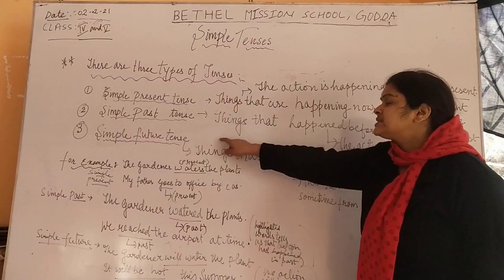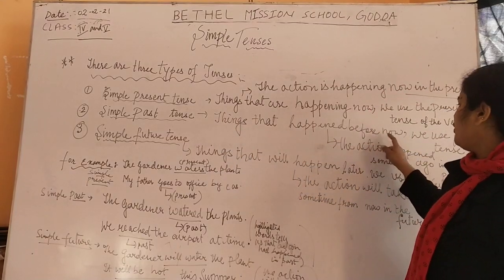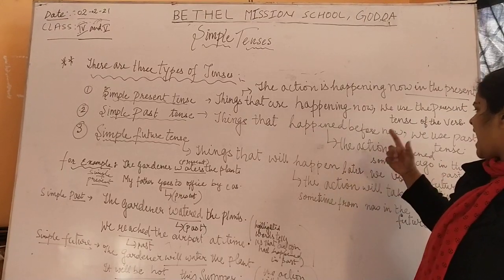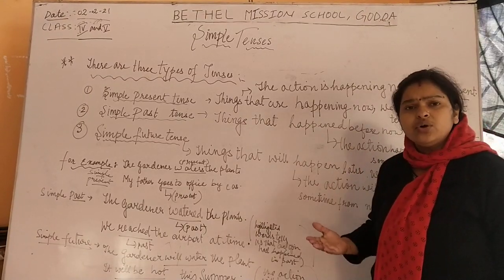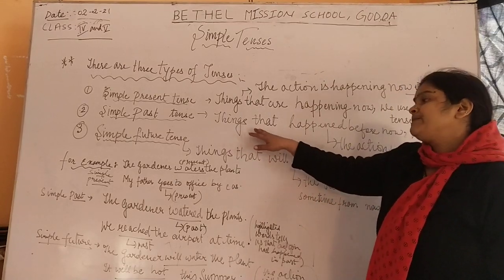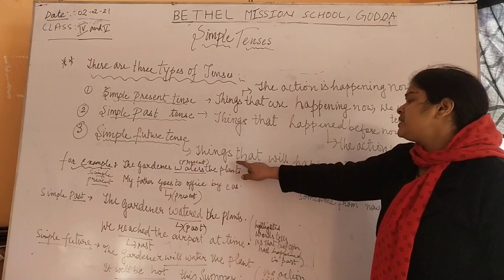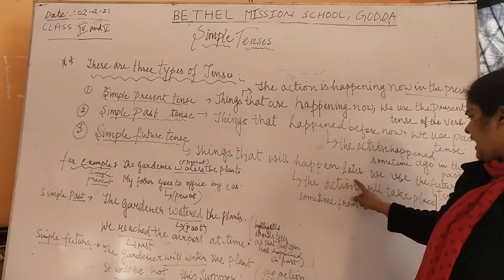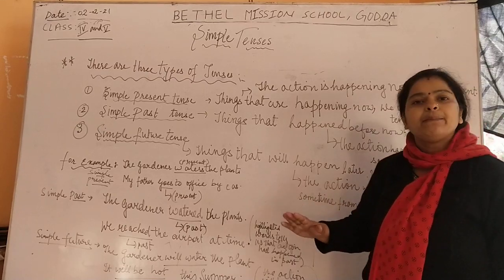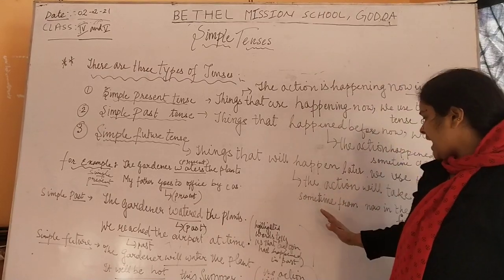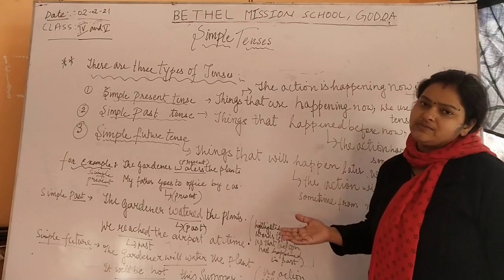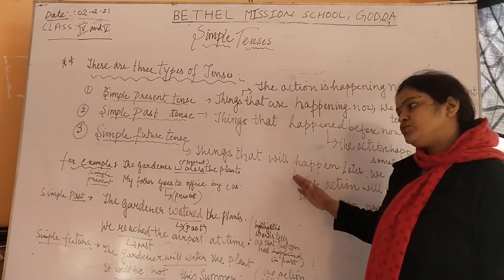Simple past tense: things that had happened before now — we use the past tense there. That means the action which had happened some time ago in past times, it is known as simple past tense. Simple future tense: the things that will happen later — we use the future tense. The action will take place sometime in the future. It is known as simple future tense.